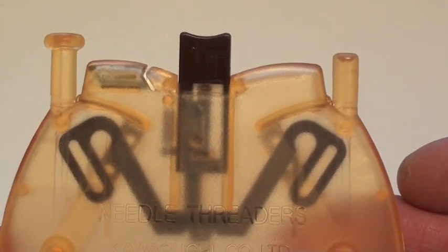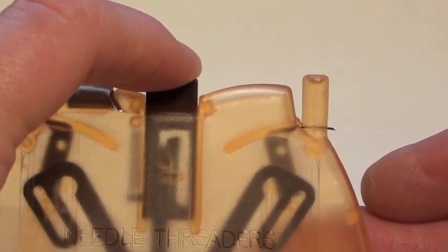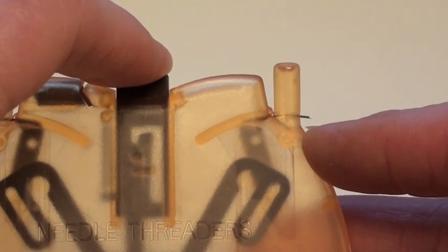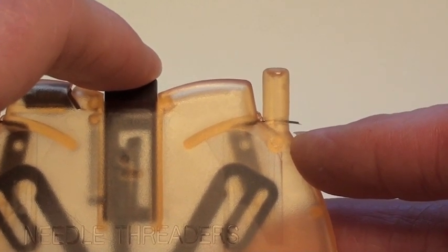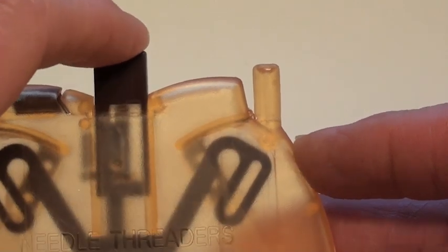Let me show you how this works. When you push this button, see the mechanism that works there? That little thing coming out the side, that's the needle threader itself that pushes the thread through the eye of the needle.